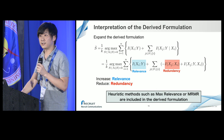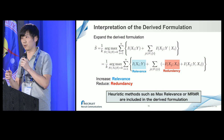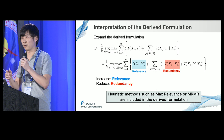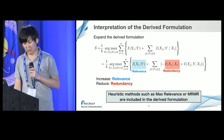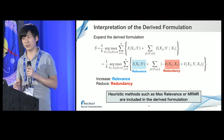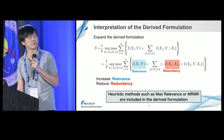Looking at the interpretation of the derived formulation: when we expand the second term, we can see three terms. The first term represents the relevancy of feature X_i to the target variable Y. The second term represents the redundancy between feature X_i and feature X_j. So in this optimization, relevancy is increased while redundancy is decreased. You might notice that heuristic methods such as max relevance and MRMR are included as special cases of the derived formulation.